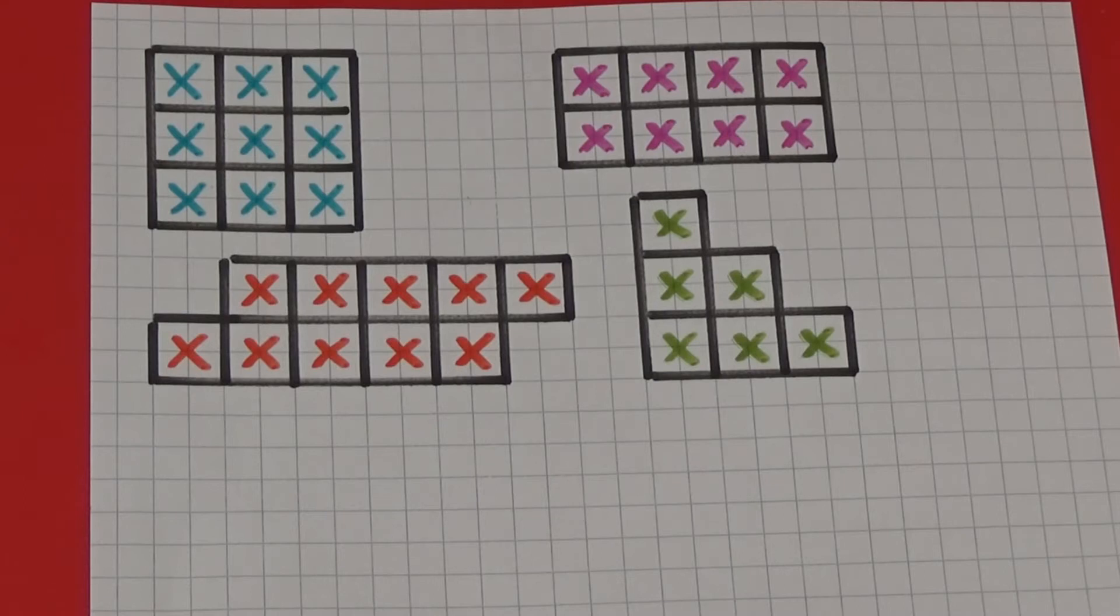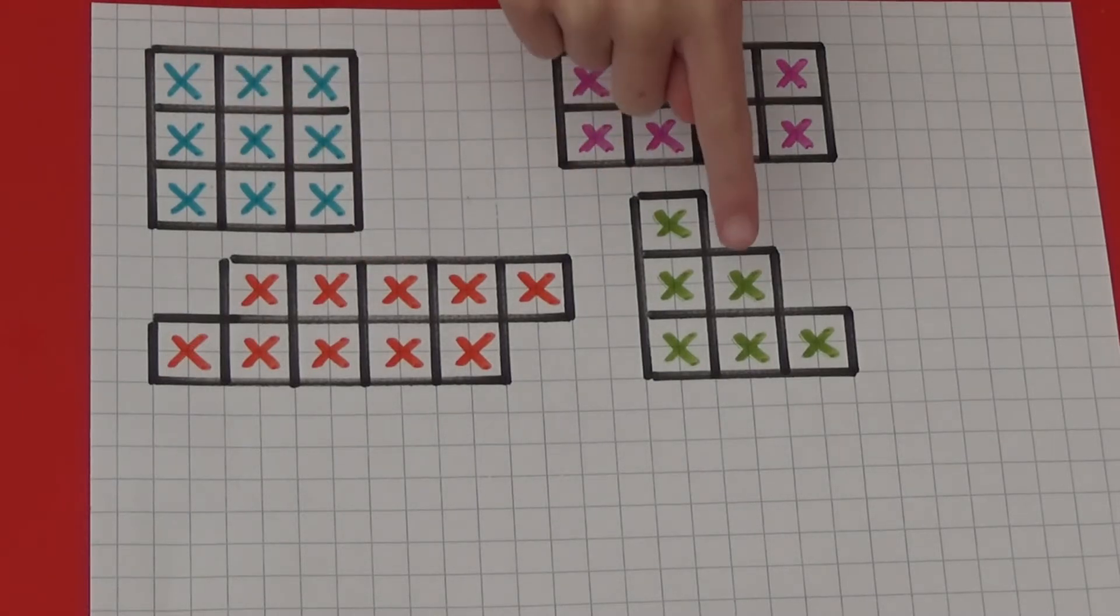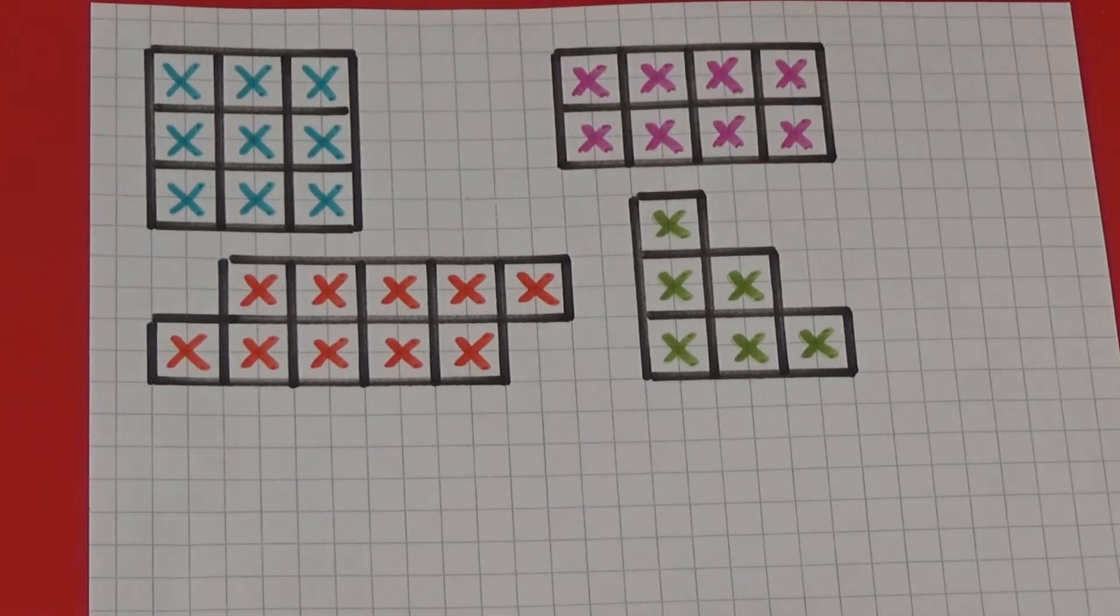Here we're going to use a square, a rectangle, a parallelogram and a triangle. You can choose any shapes you want, you just need to always make sure both players are using the same shapes.